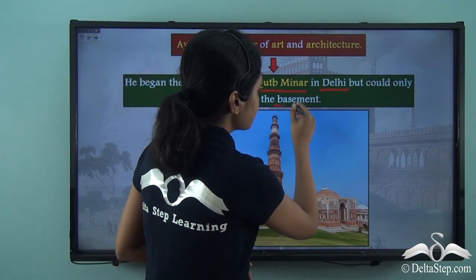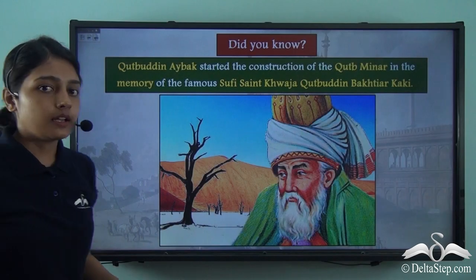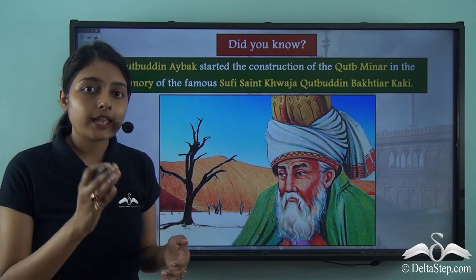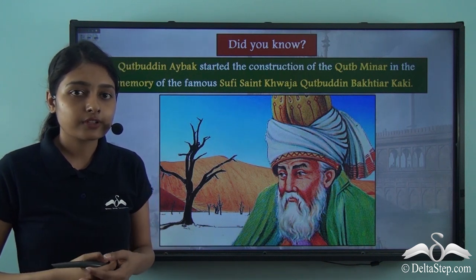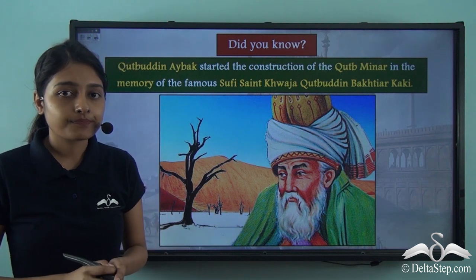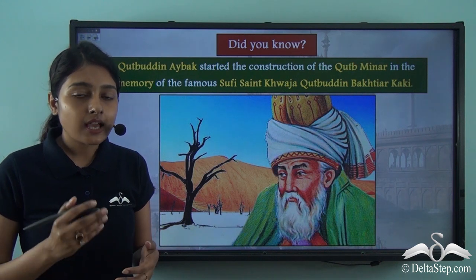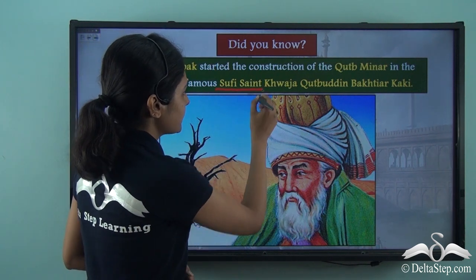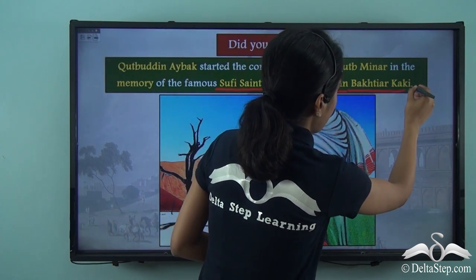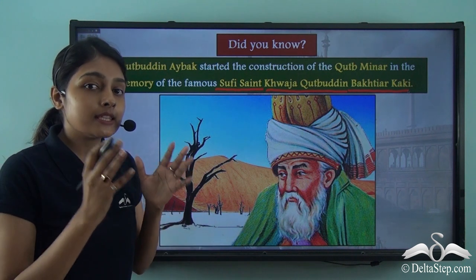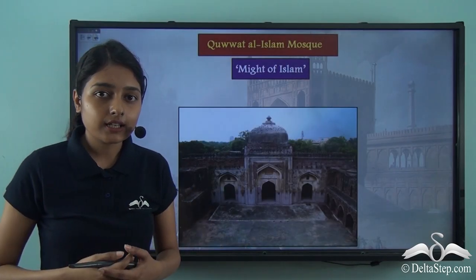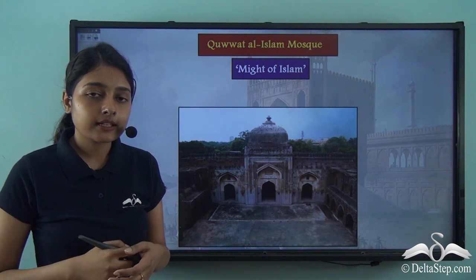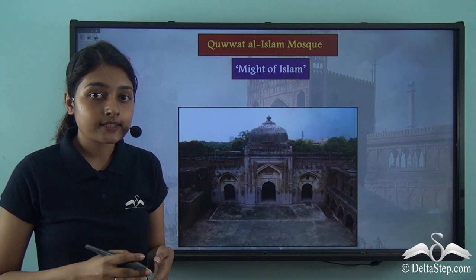The word 'Qutub' in Qutub Minar might suggest that Qutubuddin Aibak named this monument after himself, but that would be wrong. Qutubuddin Aibak started the construction of Qutub Minar in memory of the famous Sufi saint called Khwaja Qutubuddin Bakhtiyar Kaki. So this monument was named after this famous Sufi saint. Aibak was a great lover of art and architecture, and during his reign he built many mosques, monuments, and towers.